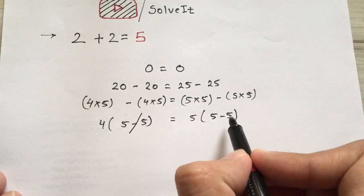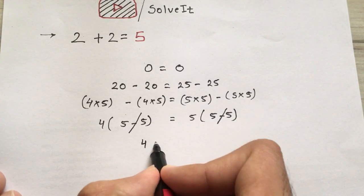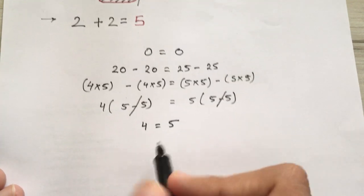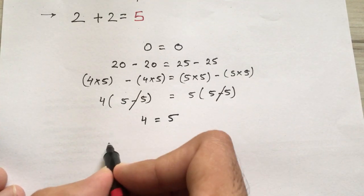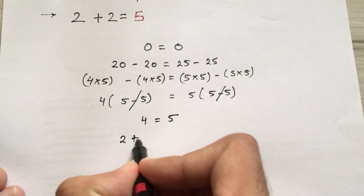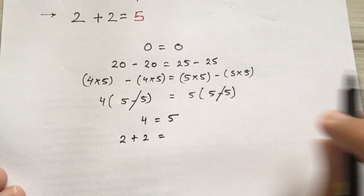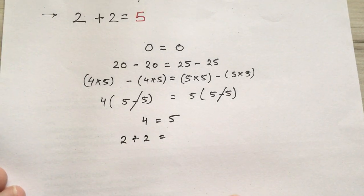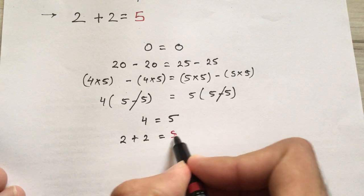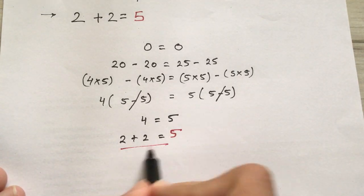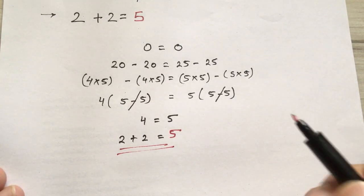We can cancel these two as these are common and we see 4 equals 5. And in this step, 4 can be written as 2 plus 2, and if you are not aware, we got our answer: 5. See, fun right?